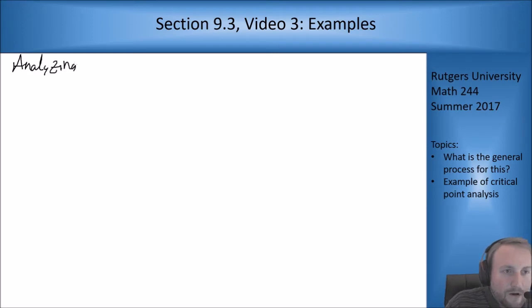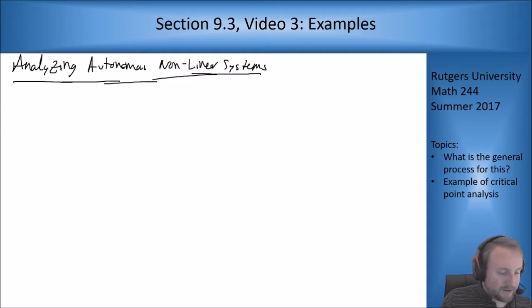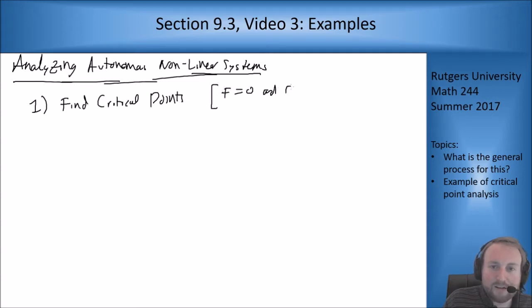Analyzing autonomous nonlinear systems. The process goes like this: We always assume our functions are at least twice differentiable. Step one is find critical points, looking at f equals zero and g equals zero.